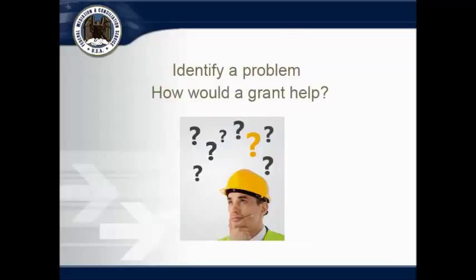The first step in your FMCS grant application process is to identify the problem you're trying to solve. What labor management relationship or job security problem needs improvement? What is the organizational effectiveness or economic development issue you want to fix? What is the solution you hope to achieve, and how would receiving a grant help you meet your specific goals?